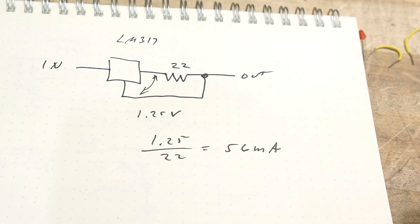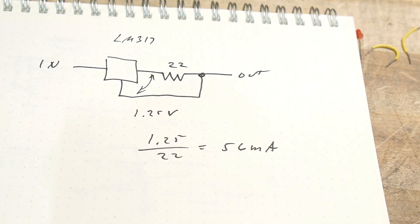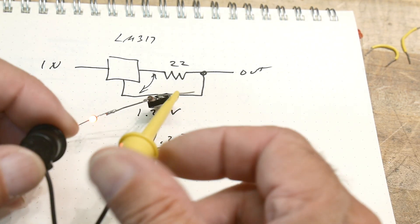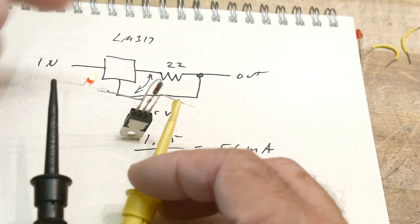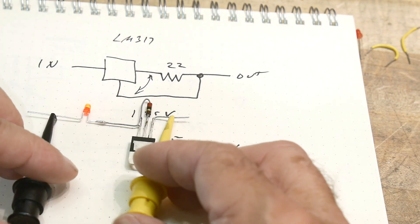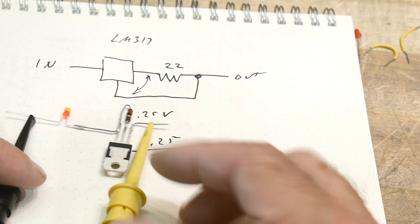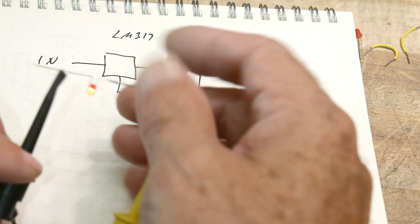So there you go. It's a nice little way of generating a constant current. You know, up to an amp, right? That kind of thing. You know, tens of milliamps to an amp, it's a pretty good.